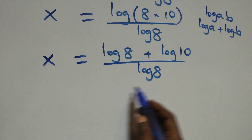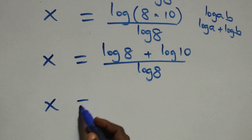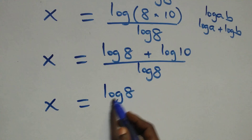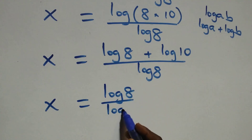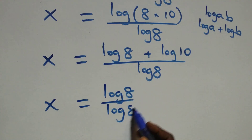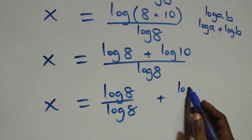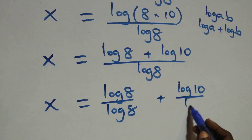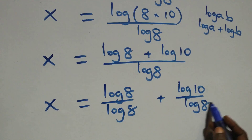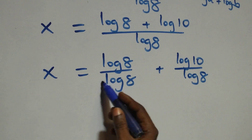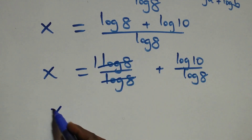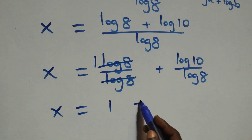We separate this into two fractions: x = log8/log8 + log10/log8. Log8 cancels each other giving 1, so x = 1 + log10/log8.